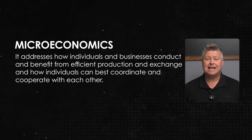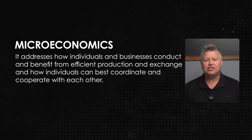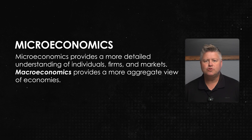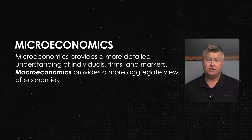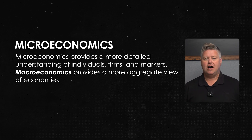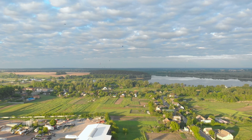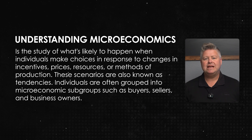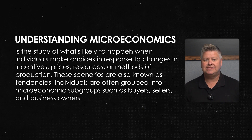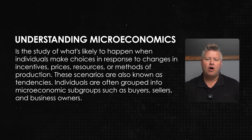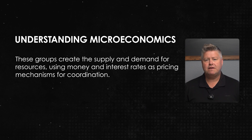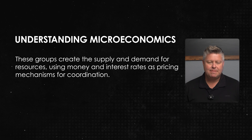Microeconomics addresses how individuals and businesses conduct and benefit from efficient production and exchange, and how individuals can best coordinate and cooperate with each other. Microeconomics provides a more detailed understanding of individuals, firms, and markets. Macroeconomics provides a more aggregate view of economies — think about that 10,000-foot view when you're looking down on the earth and you get the big picture. But microeconomics is the study of what's likely to happen when individuals make choices in response to changes in incentives, prices, resources, or methods of production. These scenarios are also known as tendencies. Individuals are often grouped into microeconomic subgroups such as buyers, sellers, and business owners. These groups create the supply and demand for resources, using money and interest rates as pricing mechanisms for coordination.